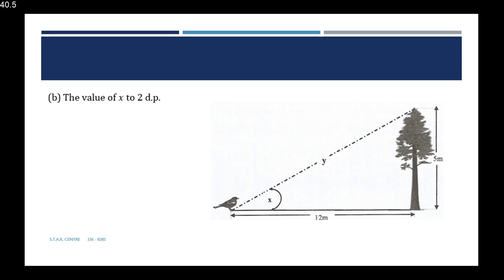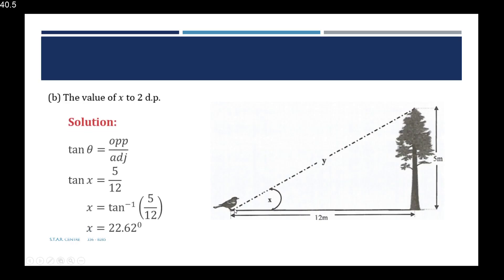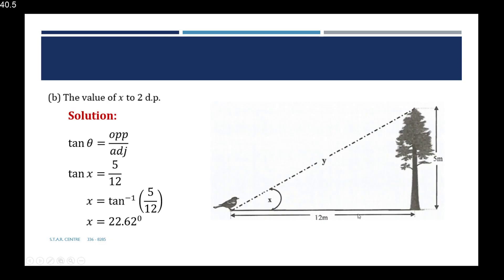Part B requires us to calculate the value of x, the angle of elevation. With reference to angle x, the 12 meters is the adjacent side and 5 meters is the opposite side. The appropriate trig ratio is tan theta, since it uses opposite and adjacent. So tan x equals 5 over 12, which gives x equals tan inverse of 5 over 12, equal to 22.62 degrees to two decimal places. If the question had not specified two decimal places, you could round to one decimal place or the nearest degree.